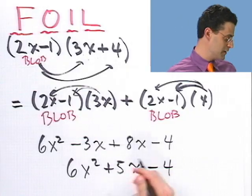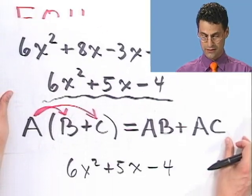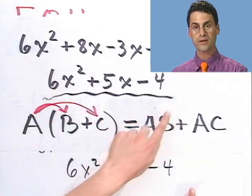And if you combine this, I see 6x² - 3x + 8x is +5x and a -4. That's what I get with using all this distributive stuff. And notice that is the exact answer we got before. So in fact, that's why FOIL works. Now you're saying, okay, fine. If FOIL works, then why are you wasting my time?